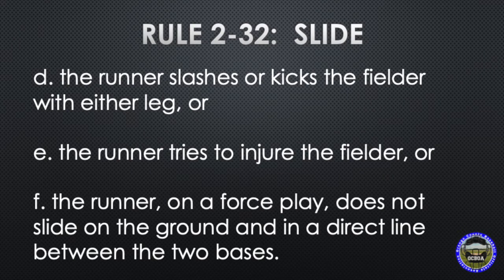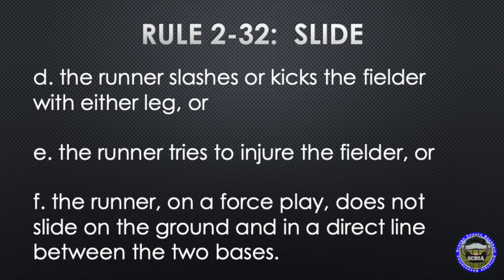Next, it would be an illegal slide if the runner slashes or kicks the fielder with either leg, or if the runner tries to injure the fielder, or if the runner on a force play does not slide on the ground in a direct line between the two bases. What we mean by in a direct line is his entire body — his feet, his legs, his trunk, his arms, his head — everything in a direct line between the two bases.